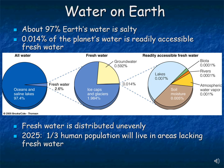Of that 0.014% that is surface water, about 50% is contained in lakes, with smaller fractions in soil moisture, the atmosphere, rivers, and plants. One of the scary things is that even though we have fresh water available, it's not distributed evenly across the globe. By 2025, it's estimated that one third of the human population will live in areas that lack easy access to fresh water.